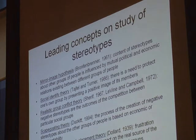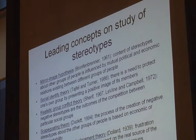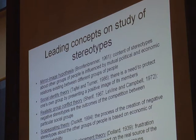One of them is the mirror image hypothesis by Bronfenbrenner from 1961, which says that the content of stereotypes about other groups of people is influenced by the mutually political and economic relations existing between different groups. This is very important to keep in mind when reading narratives in textbooks, to see the motivations lying behind certain representations. Another quite helpful concept is the social identity theory developed by Tajfel and Turner in the 1980s, which says that there is a need to protect one's own group by representing a positive image of the members of this group — and when we speak about groups in this context, we will speak about nations.